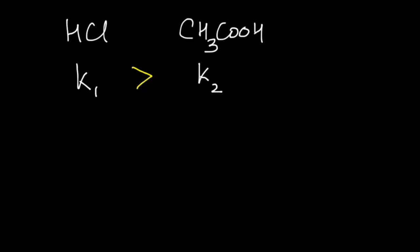What if an acid produces two H plus ions, for example, H2SO4? You can write its dissociation equations as H2SO4 gives H plus and HSO4 minus.